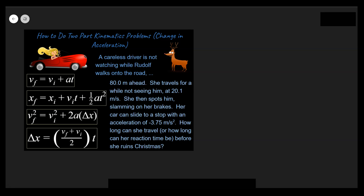What I mean by that would be an example where someone is cruising along and they hit the brakes. Or if you have a problem where there's a rocket that's accelerating upwards and then it runs out of propellant — there is a change, a transition from the first part of the problem to the second part. So let's go ahead and take a look at how to do a problem like this.